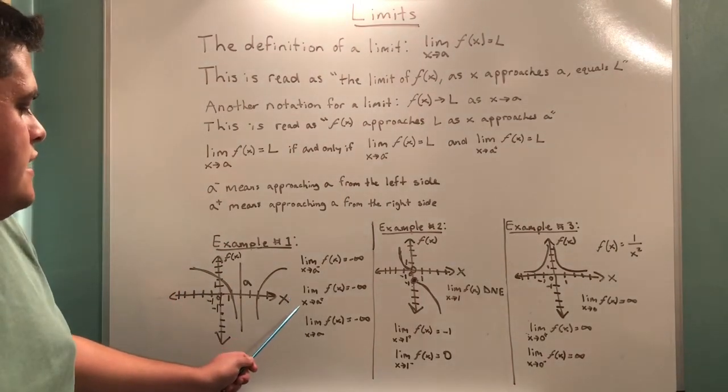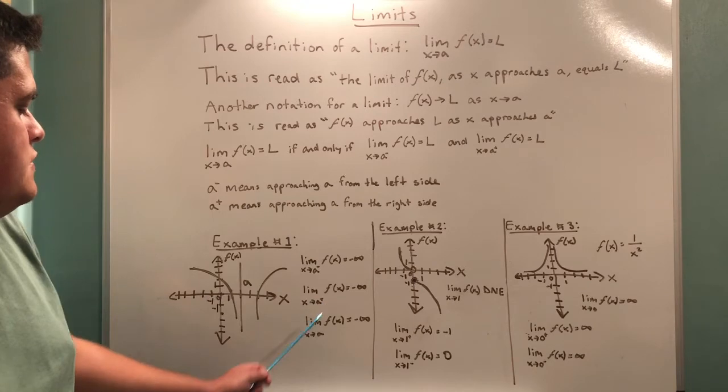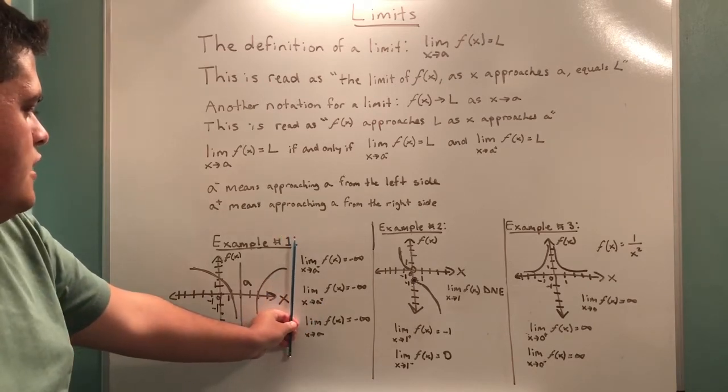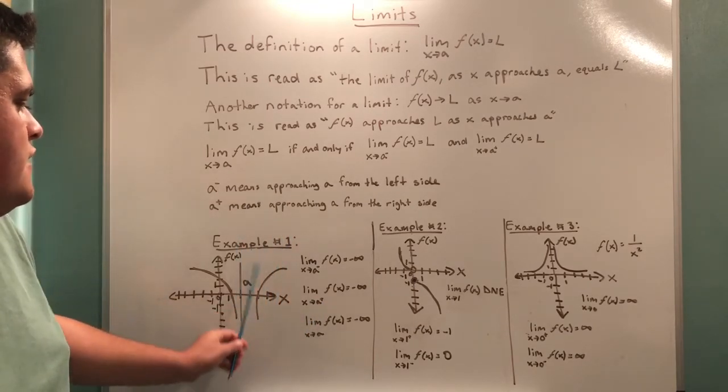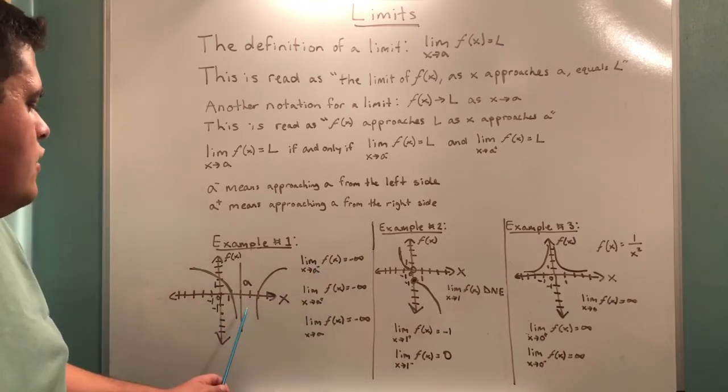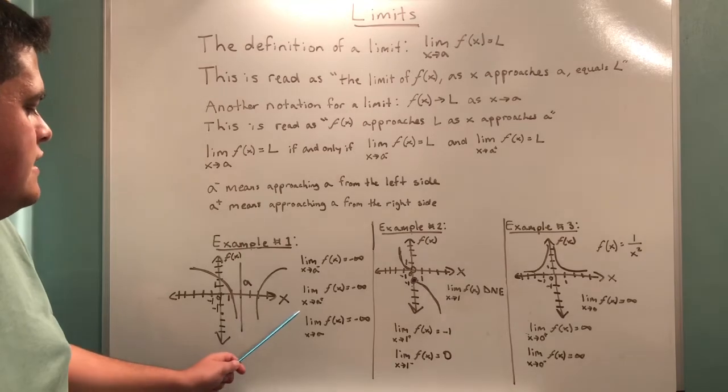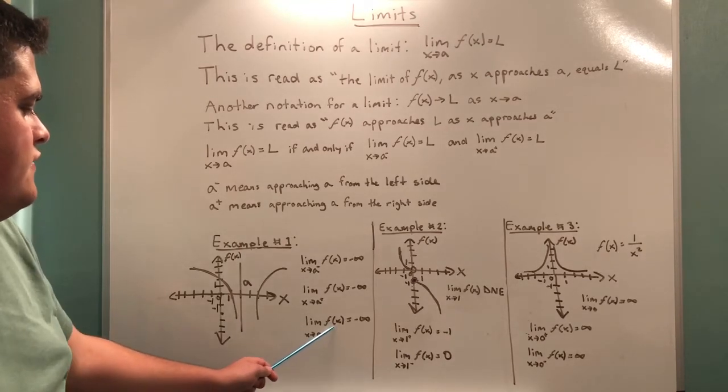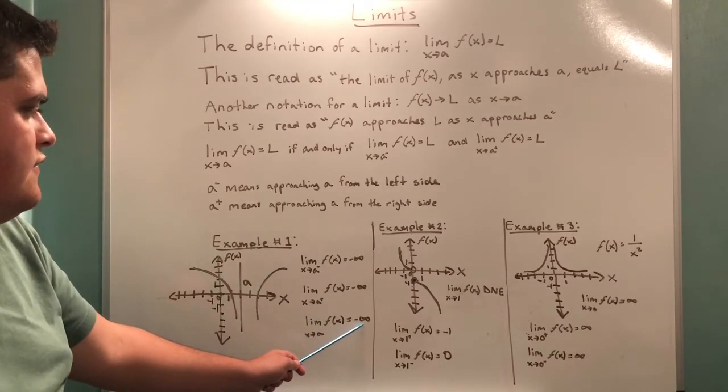The limit as x approaches a from the right, so we start at a, work from the right, go towards left to a, is also negative infinity, just like a minus. Therefore, we can conclude that the limit as x approaches a of f(x) is equal to negative infinity.